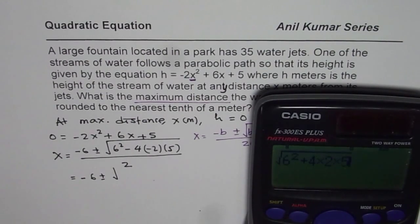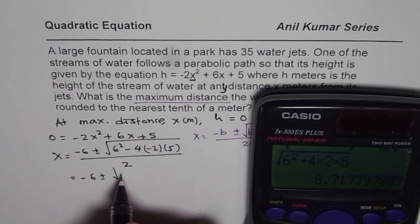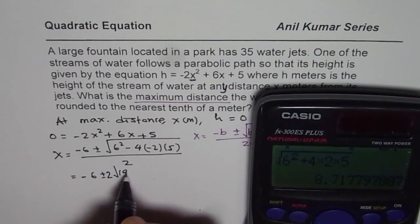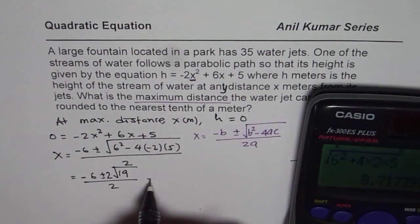So 4 times 2 times 5 equals to that, which gives us 2 square root 19. In decimals, let me write 2 square root 19 divided by 2 first, right?